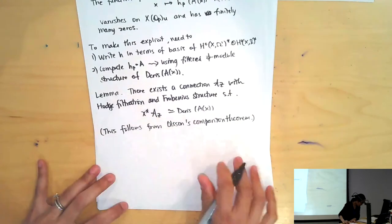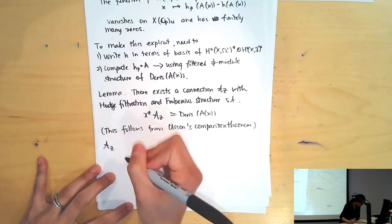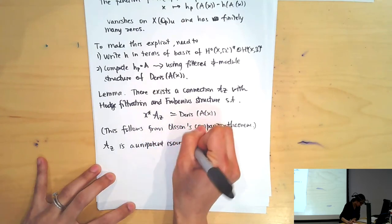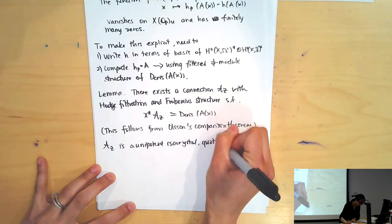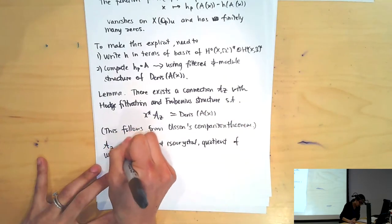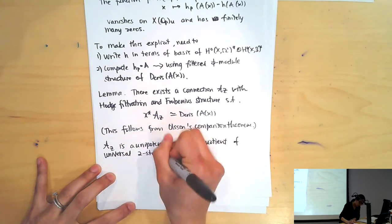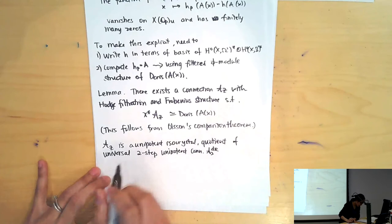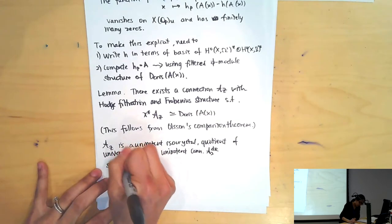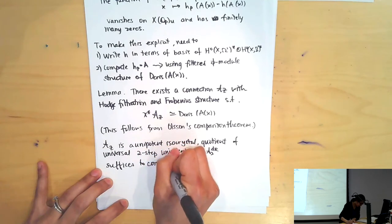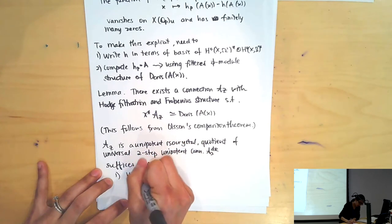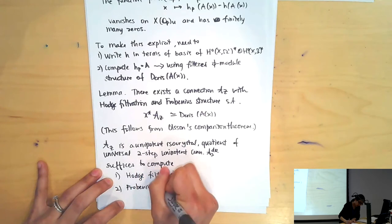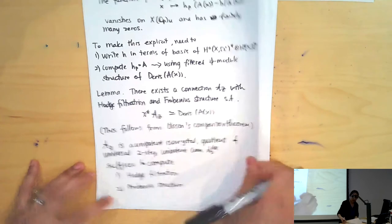This follows from Olsson's comparison theorem. A few words about A_Z: this is a unipotent isocrystal, and it's a quotient of a certain universal two-step unipotent connection A_2^Deram. So it suffices to compute a Hodge filtration and Frobenius structure.